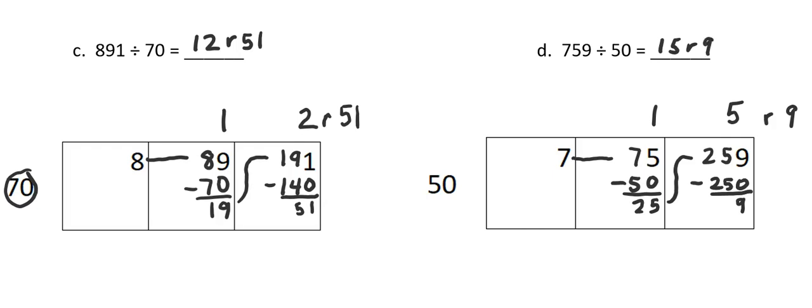So you can see that sometimes in my quotient, or my answer, I'll have two digits and a remainder, and sometimes I'll have one digit and a remainder. Something to watch for.